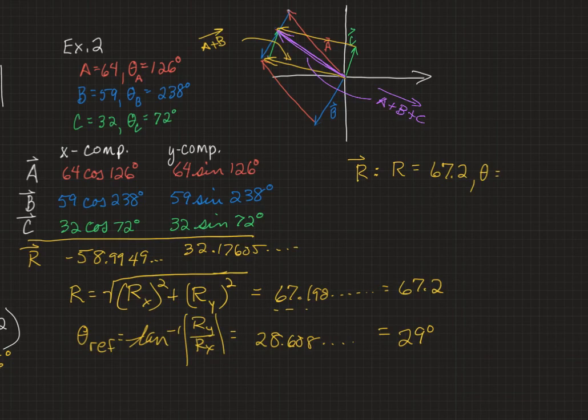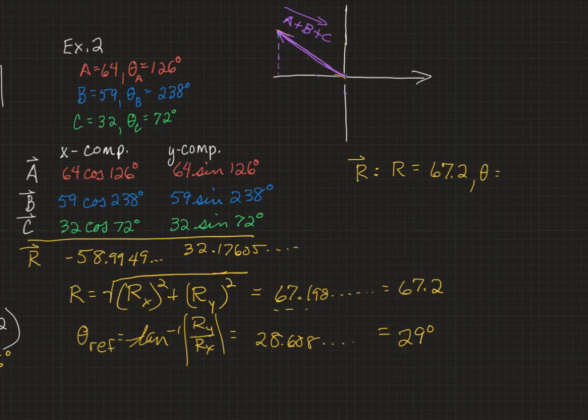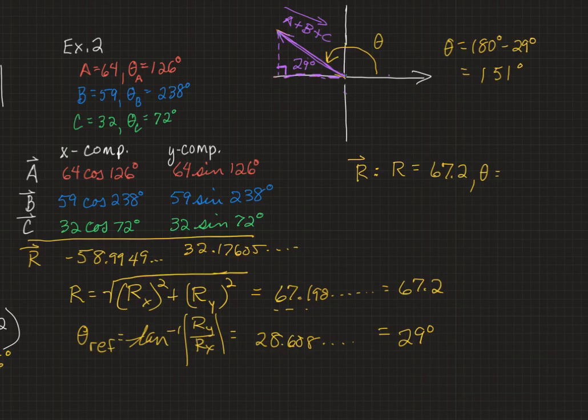And let's get rid of some of this so we can just see the resultant vector. So now that that's cleaned up, where's the reference triangle? The answer is it's right here. And so our reference angle of 29 degrees is there, and the standard angle will be here. So theta here equals 180 degrees minus theta reference. 29 degrees equals 151 degrees.